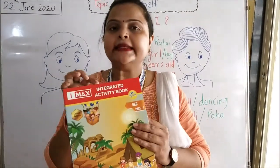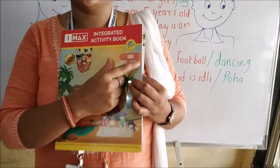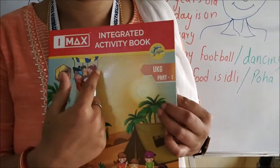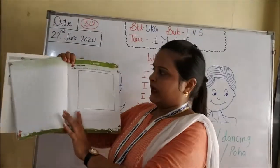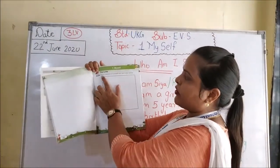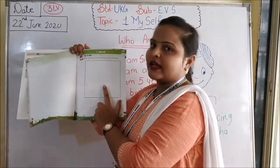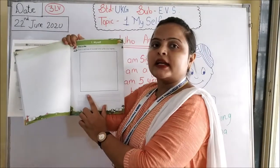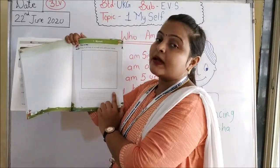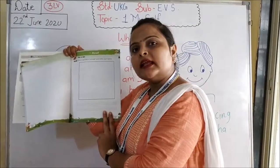All of you open your integrated activity book. Take out your book, Part 1 — it should be Part 1 ki hi book honi chahiye. Activity book. Open page number 37. Aapko yeh page nikalna hai. In this page, draw a picture of yourself and write your name. Yahan pe aapko aapka picture banana hai — agar aap girl ho tho girl ki picture, agar aap boy ho tho boy ki picture. Aur yahan pe aapko aapka full name likhna hai — full name matlab aapka naam, aapke papa ka naam, aur aapka surname. Teeno aapko yahan par likhna hai.